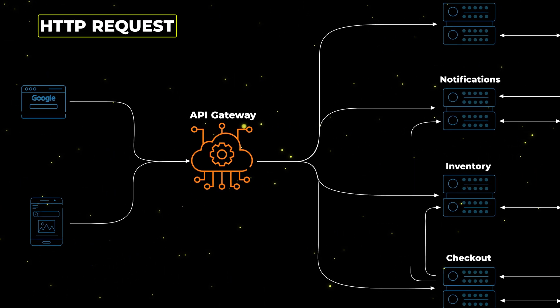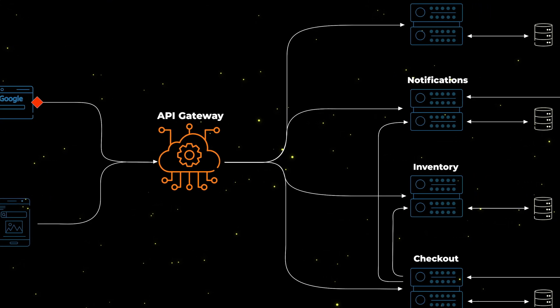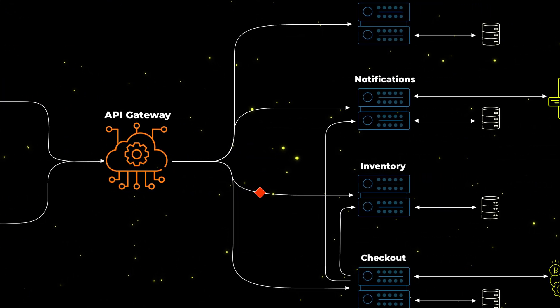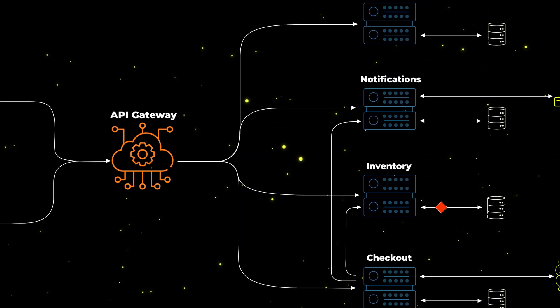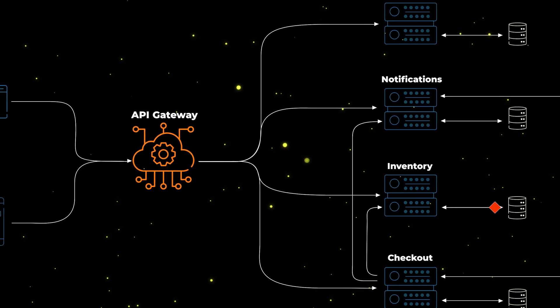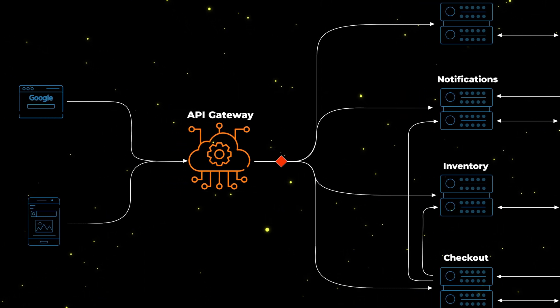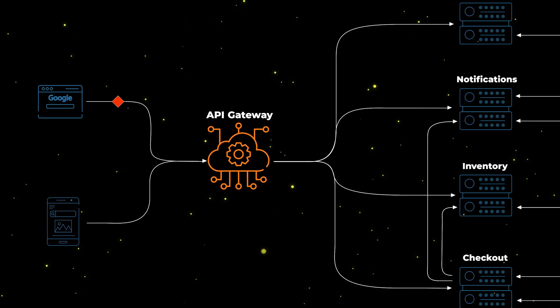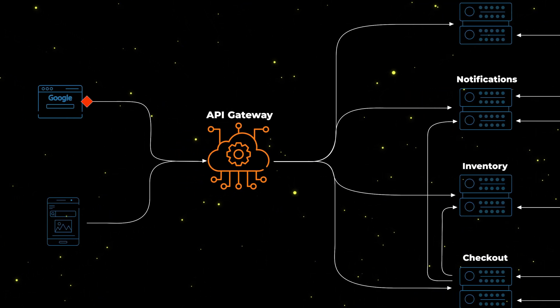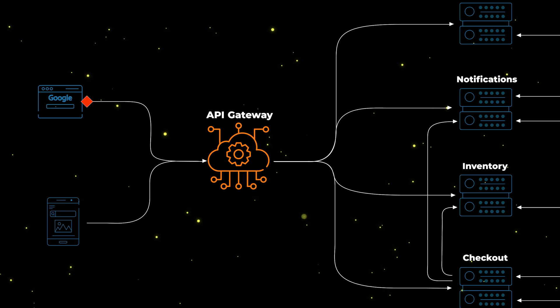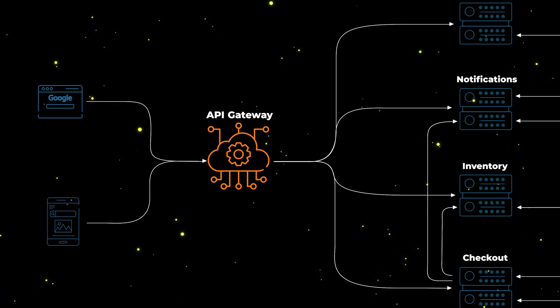If clients want to see the existing products, the UI will make an HTTP request to the gateway, which will forward the request to the inventory microservice that will retrieve available products from its database and return them back on the response to be displayed on the UI.